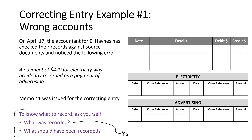We accidentally recorded a payment of advertising. If we think about what that would normally look like, we would debit advertising, we would normally credit bank, and typically we would also be making a payment of GST — so we would also be debiting GST clearing.